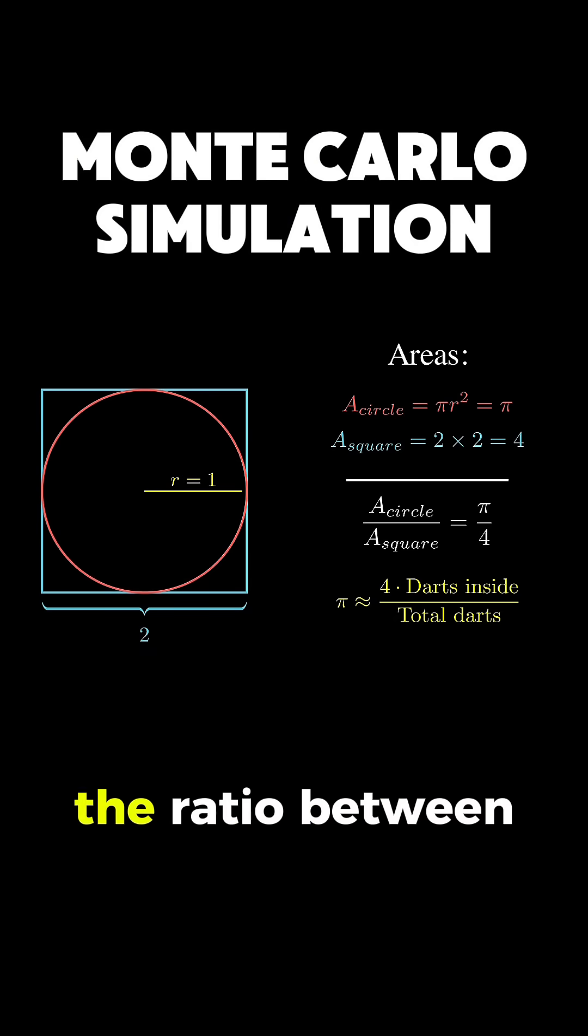So we'd expect that the ratio between the number of darts inside divided by the total darts to also be pi divided by 4. So pi will be equal to 4 multiplied by the number of darts inside divided by the total darts.